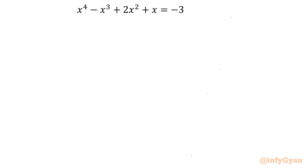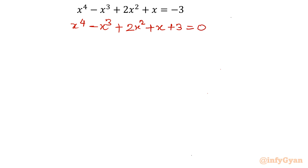We have to find out 4 solutions, whether real or complex. Let me begin this problem by writing all the terms towards the left, so: x⁴ minus x³ plus 2x² plus x plus 3 equal to 0.